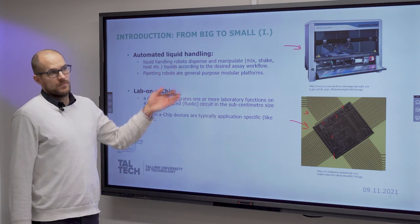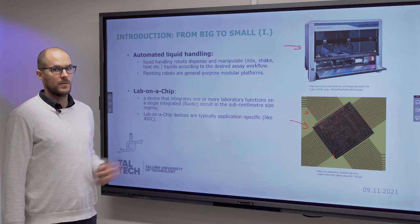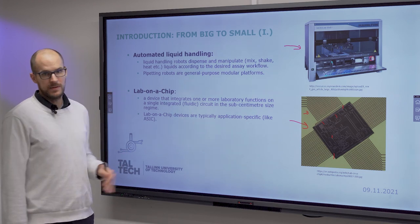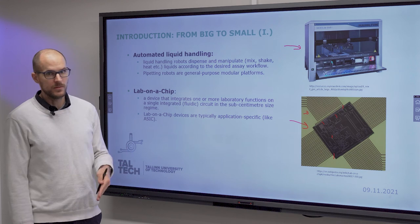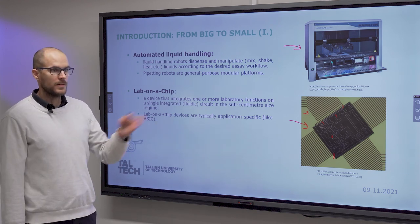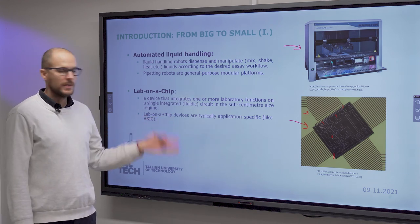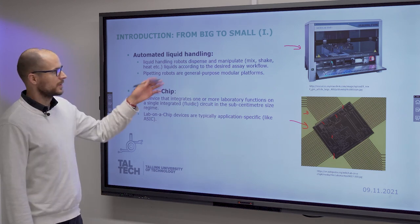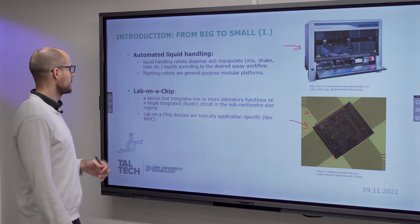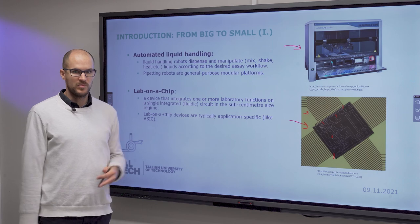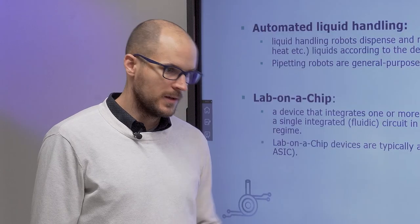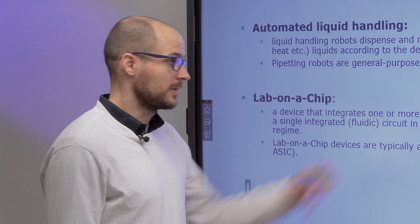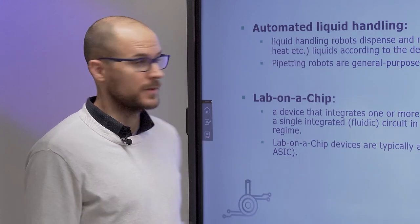The Hamilton Star robot can perform pretty much everything in your analytical workflow: it can mix, shake, heat, cool, and move liquids in predefined volumes between different containers. These robots are general purpose and modular. The only problem is they are expensive and quite large compared to what lab on a chip can do for you.